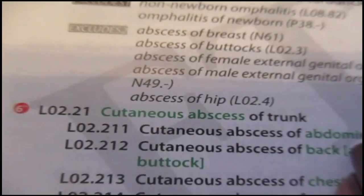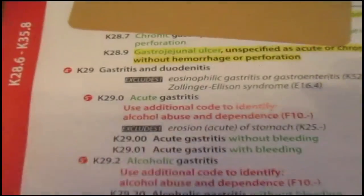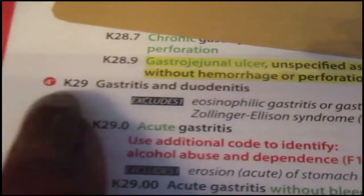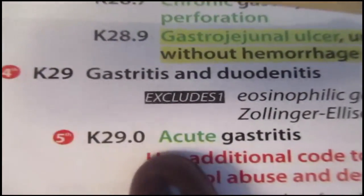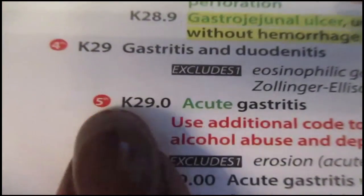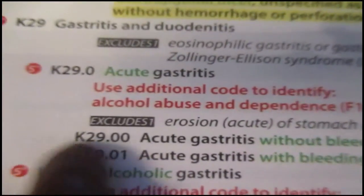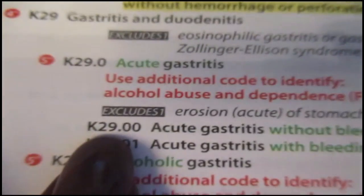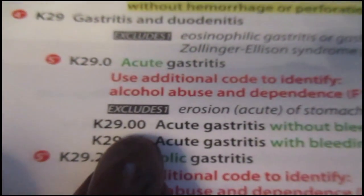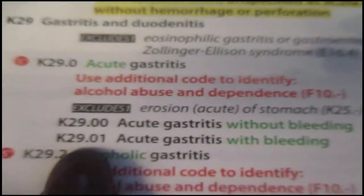Let me give you another example — let's go to K-29. K-29 is gastritis and duodenitis. Notice K-29 tells me to carry that three-digit code to the fourth digit — there's a four in a circle. K-29.0 is acute gastritis, but four digits is telling me to take it to the fifth digit. So K-29.00 is acute gastritis without bleeding. When I got to K-29.00, there's no little circle, so that's as far as that code will go. However, if I needed to identify with bleeding, I'd go to K-29.01.